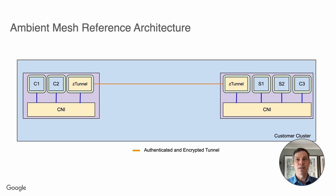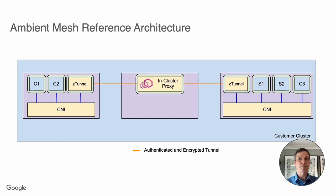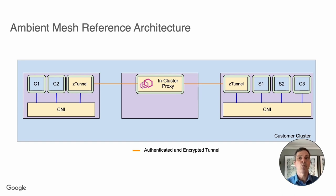At the time of the Ambient announcement, we created a reference implementation in Rust called ZTunnel. This was done to make a fairly portable implementation that could be integrated with many existing CNIs. When L7 policies are used, the L4 component securely redirects traffic through a Waypoint proxy, which is a full proxy that can handle the L7 requirements of Istio. Similar to the L4 component, the Ambient reference implementation provides an Envoy-based Waypoint proxy deployed in its own pod to handle L7 policy enforcement.